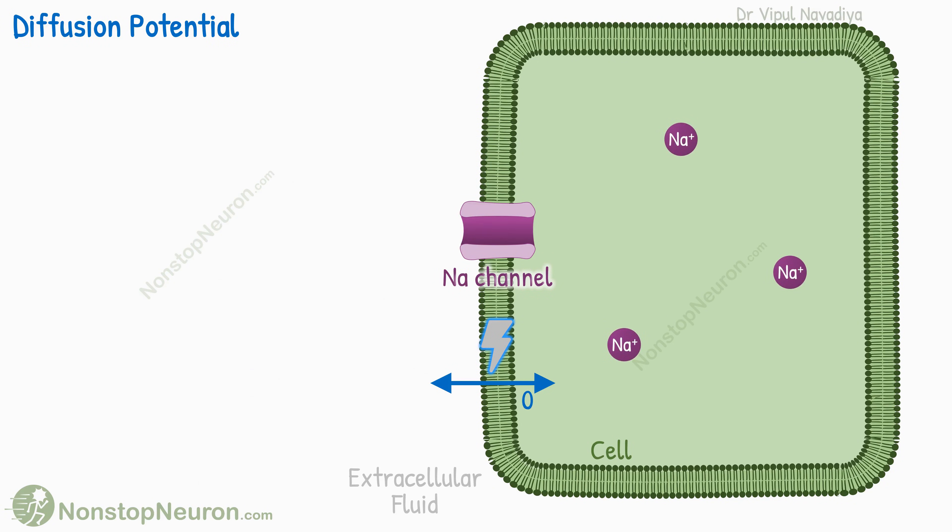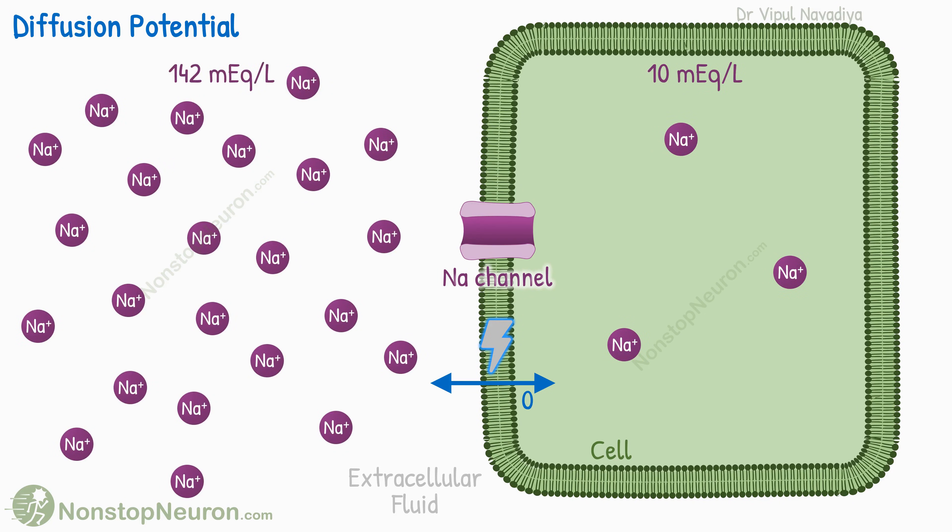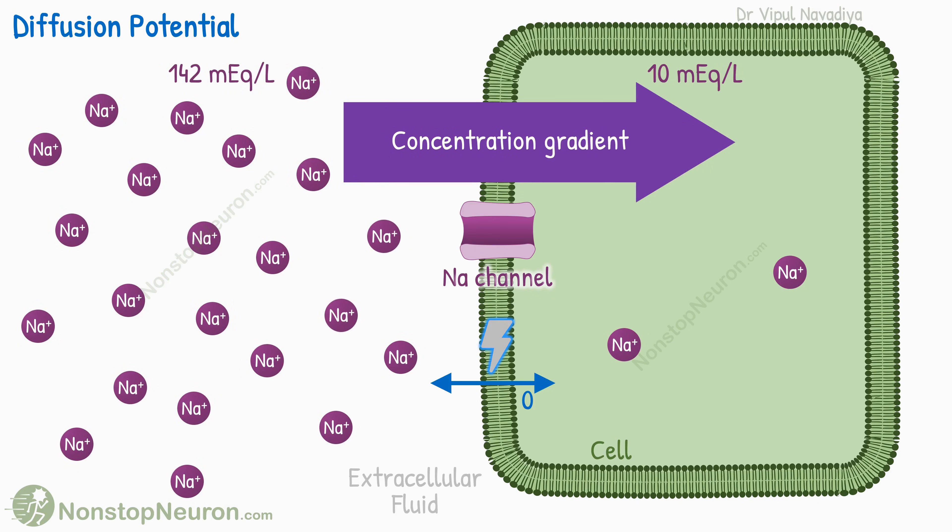The concentration of sodium inside the cell is about 10 millequivalent per liter, and that outside the cell is about 142 millequivalent per liter. Due to the higher concentration outside, the sodium ions diffuse from outside to inside, and as they do so, they take in their positive charge with them.